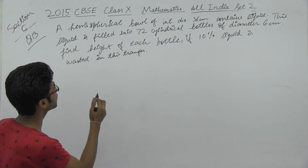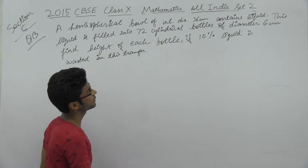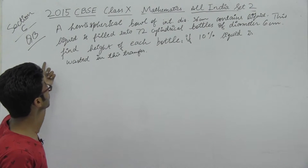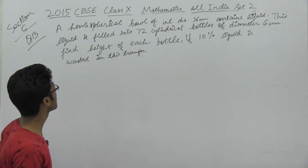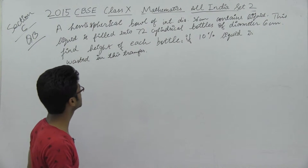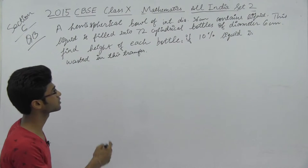A hemispherical bowl of internal diameter 36 cm contains liquid. This liquid is filled into 72 cylindrical bottles of diameter 6 cm. Find the height of each bottle if 10% of the liquid is wasted in this transfer.